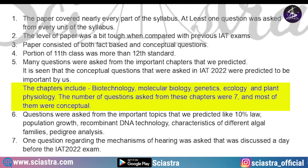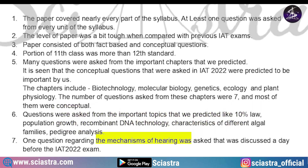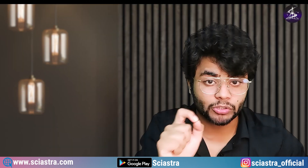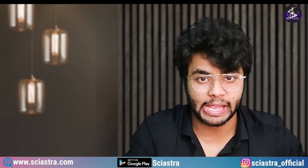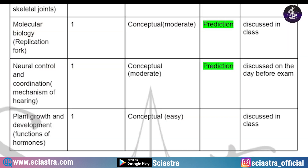From neural control, the topic was mechanism of hearing — already discussed one day before the examination and the question came in the actual IAT exam. Then other chapters covered the topic of functions of hormones.